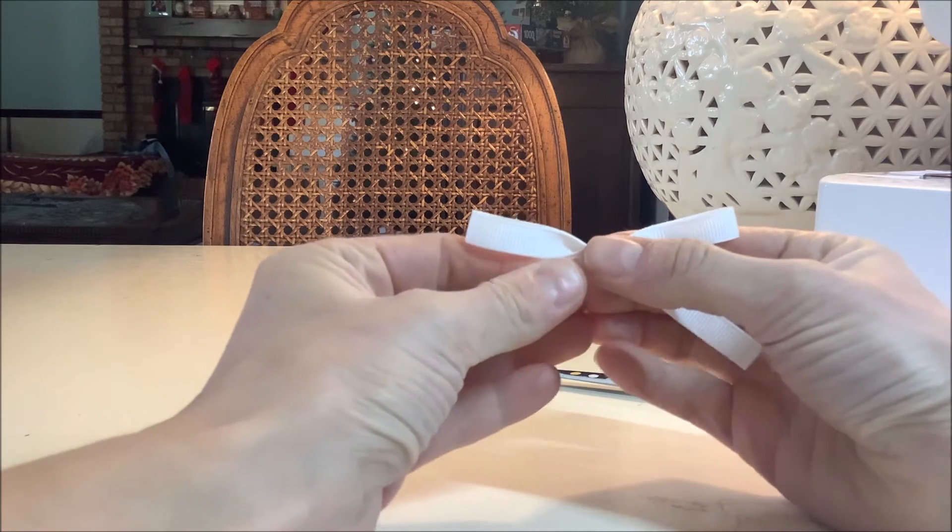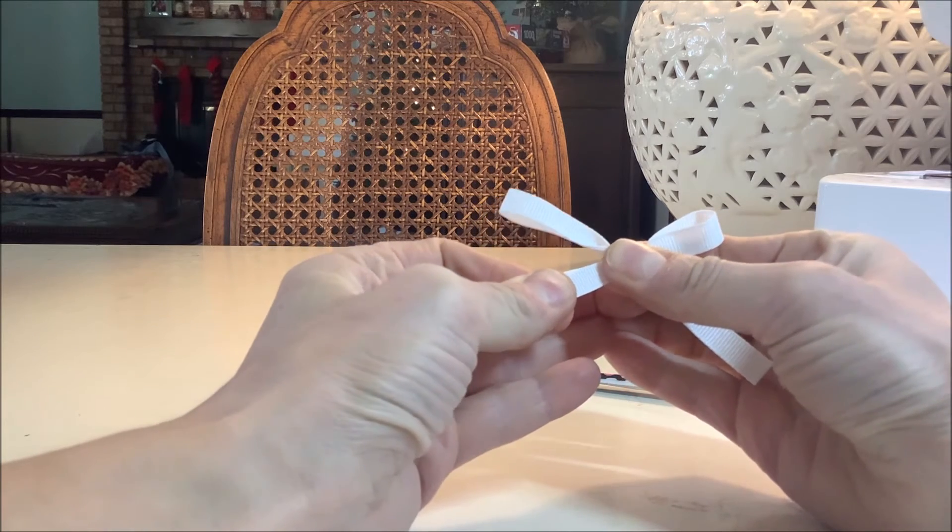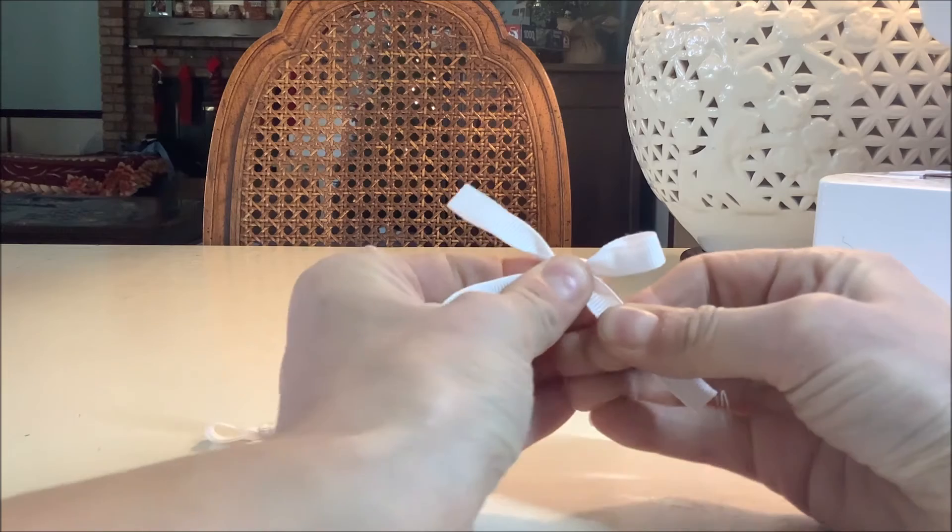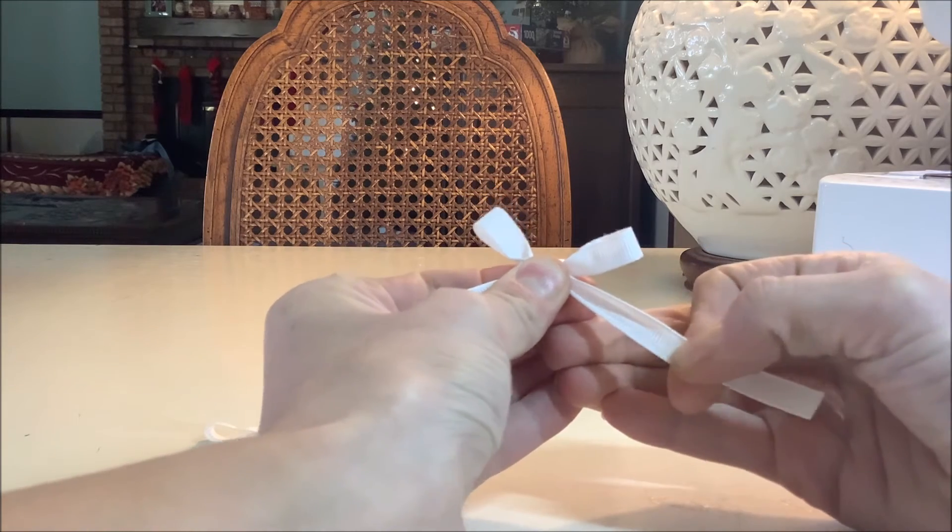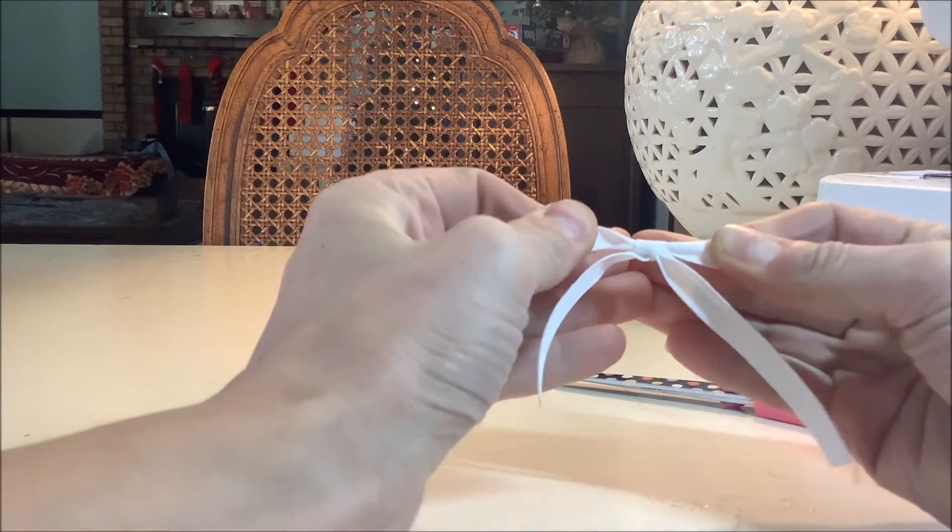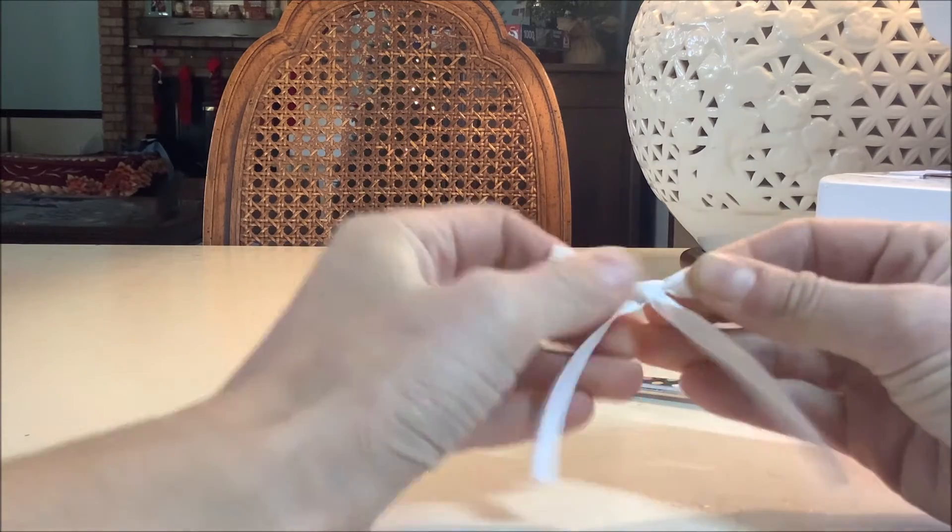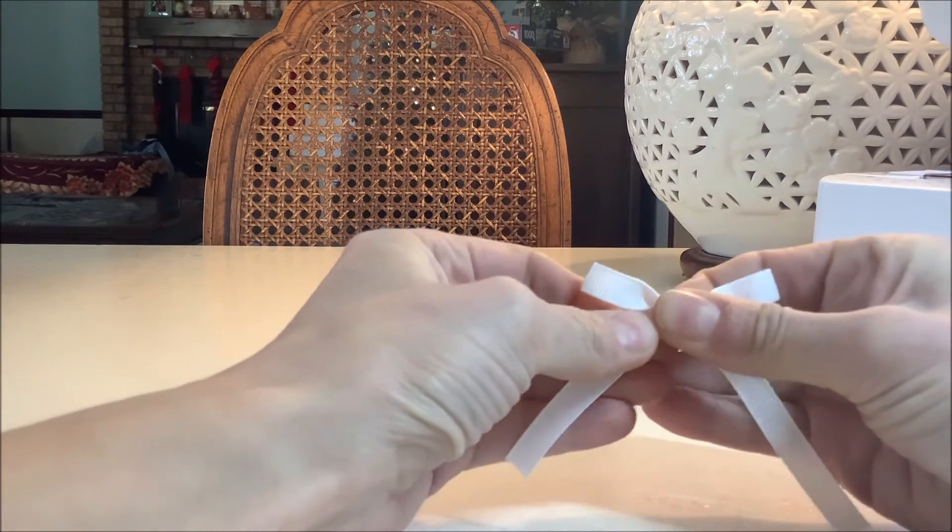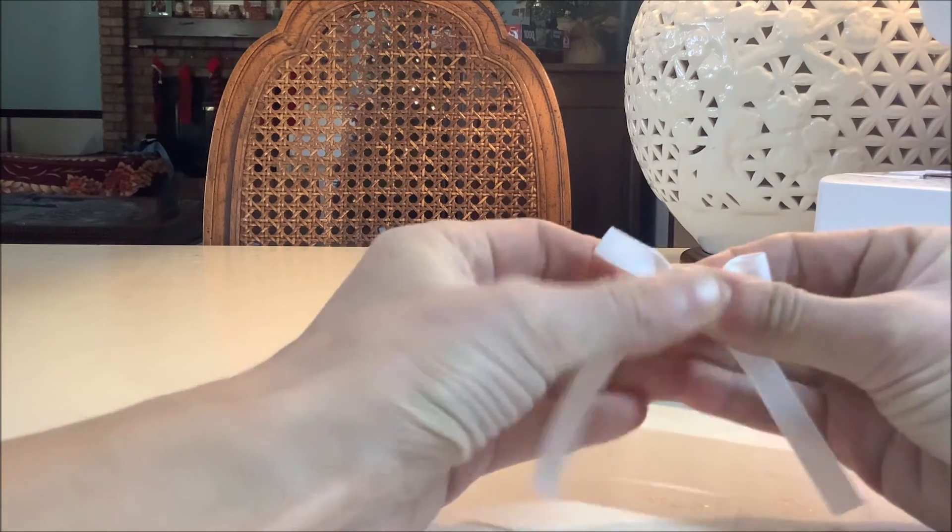Just pull the ends - it'll make the loop smaller. Pull the end over here and do the same thing again. Pull those loops apart and adjust the size.